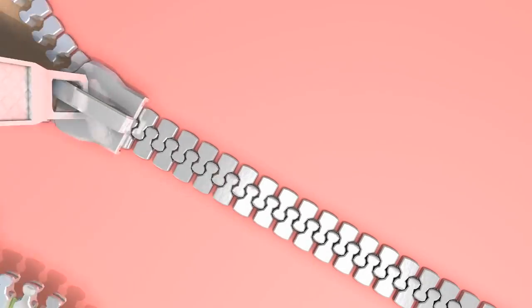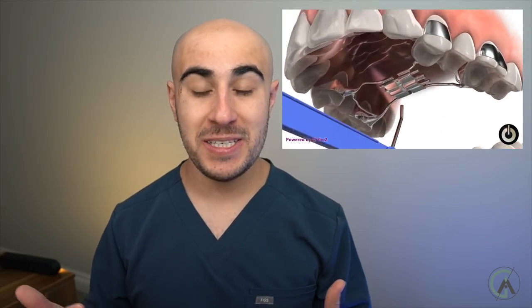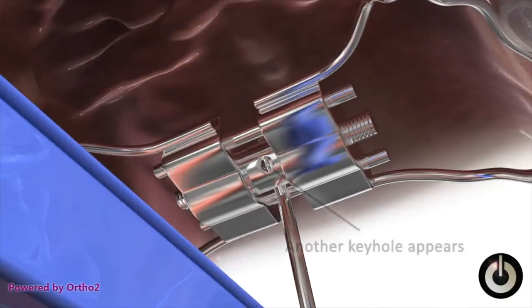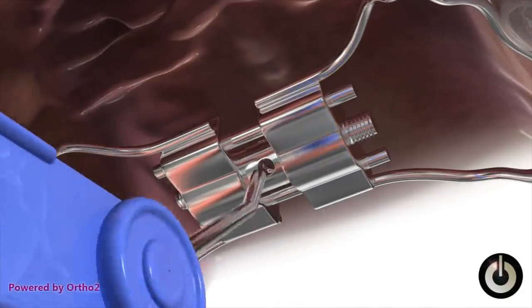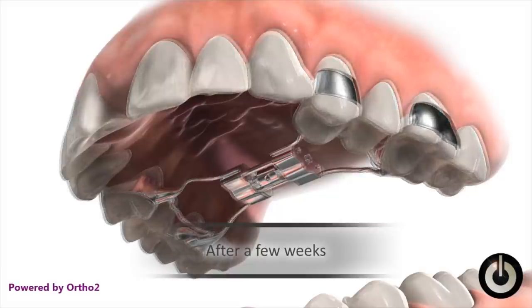If we have a crossbite of the back teeth, this can be treated very predictably when patients are younger — in their early teens or even in phase one, which is patients under 10 years old. This is because the upper jaw, the maxilla, is actually two bones when we're younger. As we age, the maxilla starts to fuse together like a zipper, making it hard to expand. That's why we recommend early intervention using something like an expander — cemented onto the back teeth and turned at home, generally at night, to expand the upper jaw into proper position.